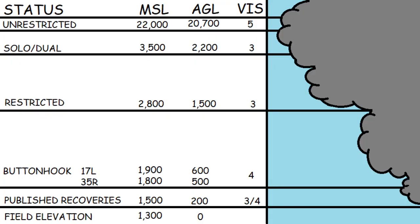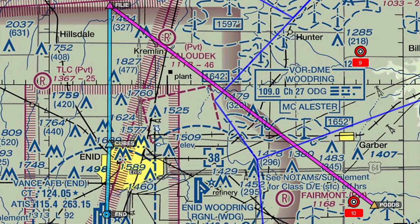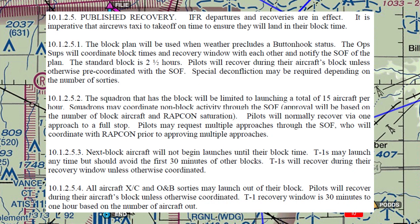When the weather is less than button hook but at least 200 and ¾ mile visibility, the expected status is published recoveries. Airborne aircraft will return to Vance via the center runway ILS. With this status, the airfield is operating on single runway operations. RAPCON limits the number of aircraft airborne to 15 during published recoveries due to workload, approach sequencing, and single runway constraints. For this reason, T-6s and T-38s operate on a block plan put in place by the SOF — a 2 or 2.5 hour alternating window in which each airframe can fly. For example, 15 T-38s may fly from 10 to 12 o'clock, and then 15 T-6s may fly from 12 to 2 o'clock. This block plan remains in place until weather improves to button hook or better, or the status changes to standby or stand down. Aircraft may launch out of their block on out-and-back and cross-country sorties if coordinated with the ops supervisor and approved by the SOF.